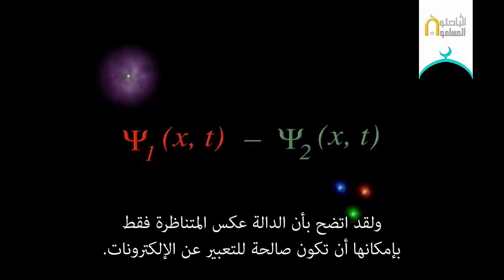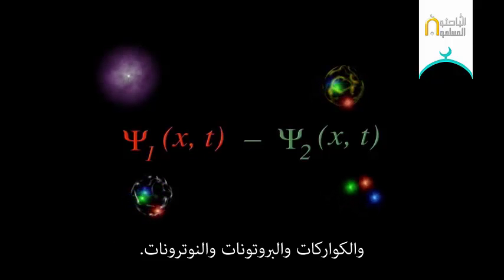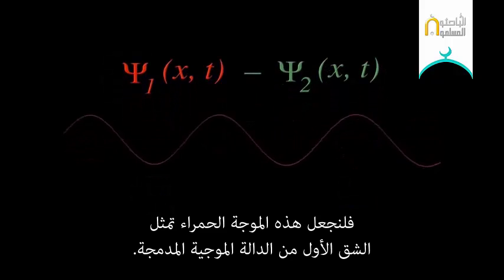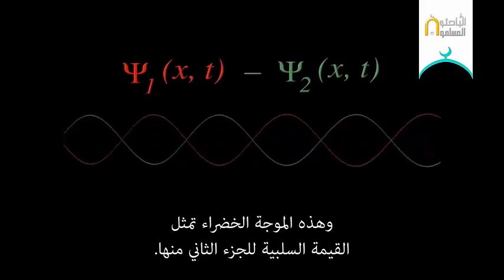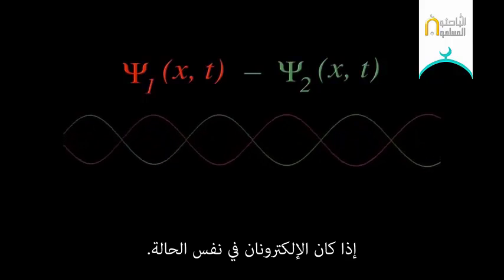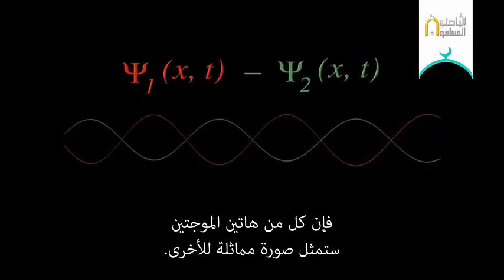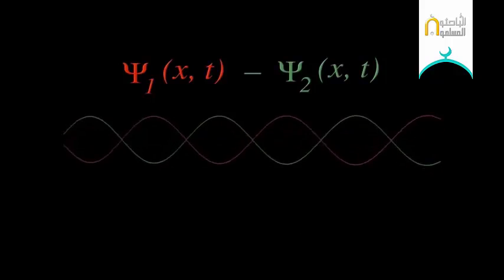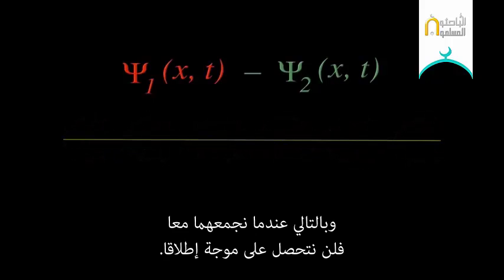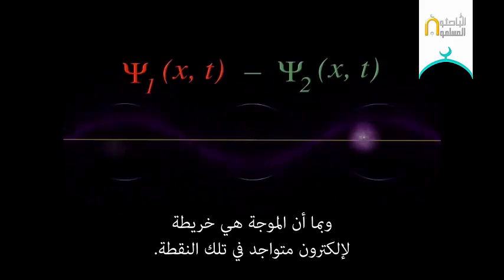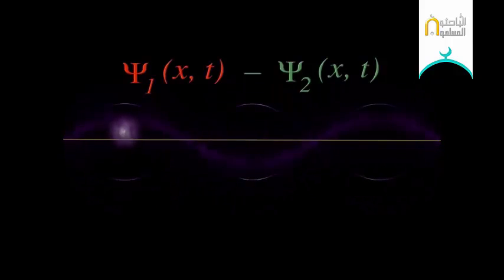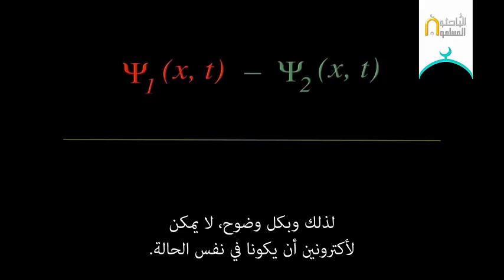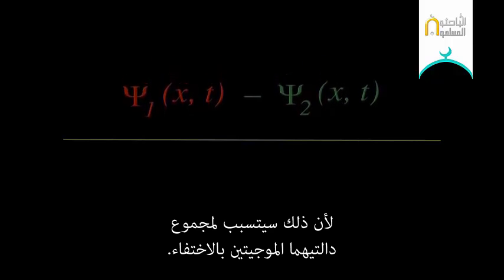And it turns out that only the anti-symmetric function works for the electrons, and quarks, and protons, and neutrons. Let's let this red wave represent the first part of the combined wave function, and this green wave represent the negative of the second part. If the electrons are in the same state, these two waves will be a mirror image of one another — as one goes up, the other goes down in perfect synchrony. So when we combine them, we get no wave at all. And since the wave is a map of electrons existing at that point, no wave means no electrons. So clearly, two electrons can never be in the same state, because that causes their combined wave function to disappear.